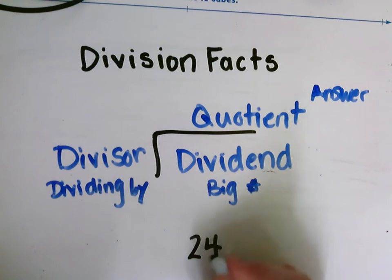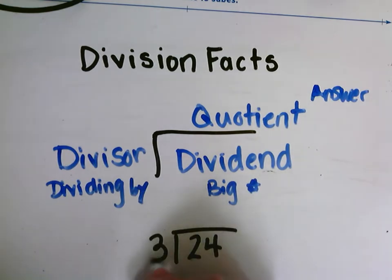So let's take a look at a problem here. Let's write it underneath. Let's do 24 divided by 3. So remember as we work with our fact families, we work with those missing factors.